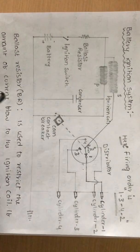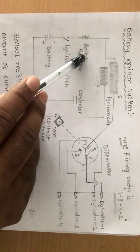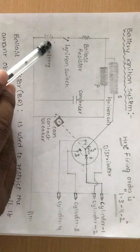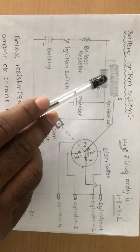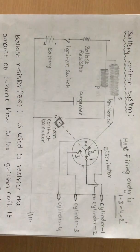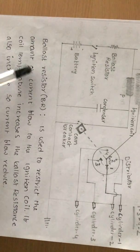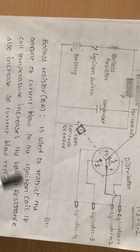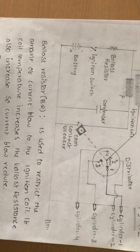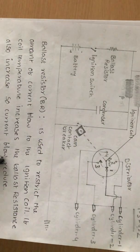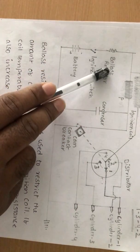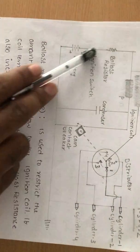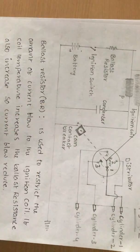We should know about the ballast resistor. When current is supplied from the battery to the ignition coil, the ignition coil temperature increases. To reduce the temperature, we place the ballast resistor. The ballast resistor is used to restrict the amount of current flow to the ignition coil. If the ignition coil temperature increases, the ballast resistance also increases, which reduces the current flow and thus reduces the temperature.